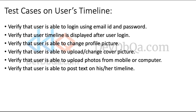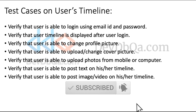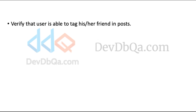Verify that user is able to post text on his or her timeline. Verify that user is able to post image or video on his or her timeline — the user should be able to post text, images, and videos. Verify that user is able to tag his or her friends in the post.